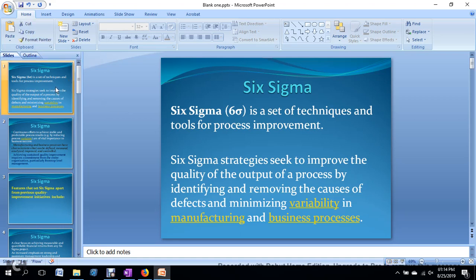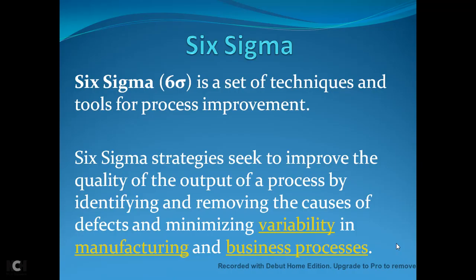Today's topic is Six Sigma. Six Sigma is a set of techniques or tools for process improvement. The Six Sigma method seeks to improve the quality of the output of a process by identifying and removing the causes of defects and minimizing the variations in manufacturing and business processes.